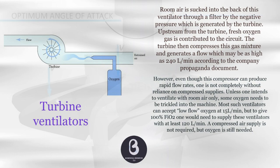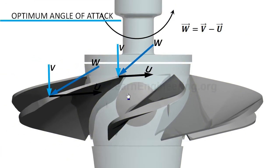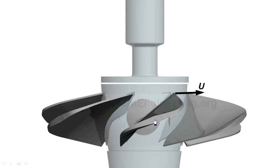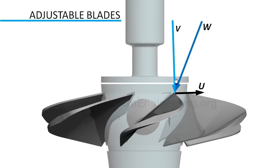Modern NIV capable ventilators use sophisticated leak detection algorithms to compensate for leaks, maintaining volume delivery in spite of even large leaks.